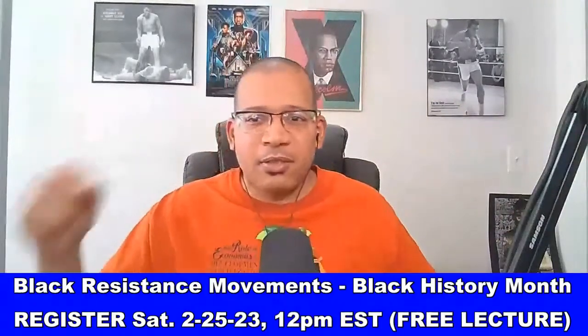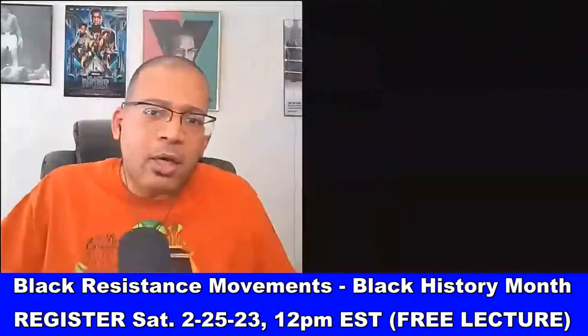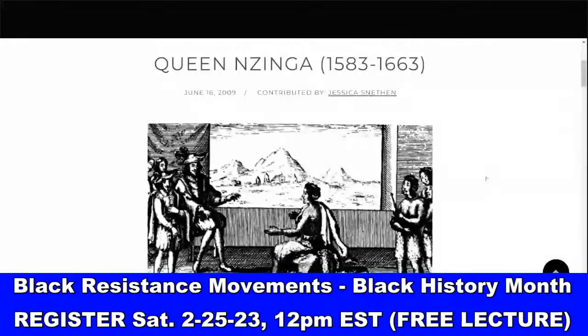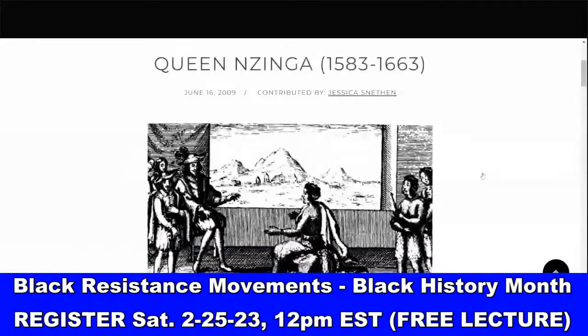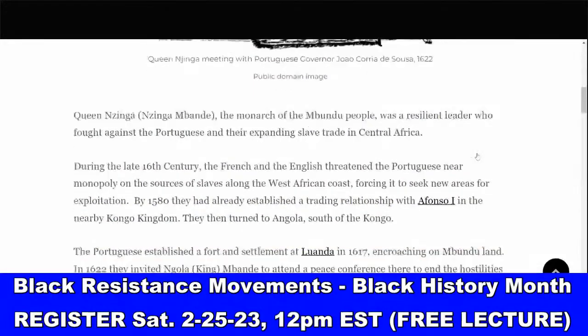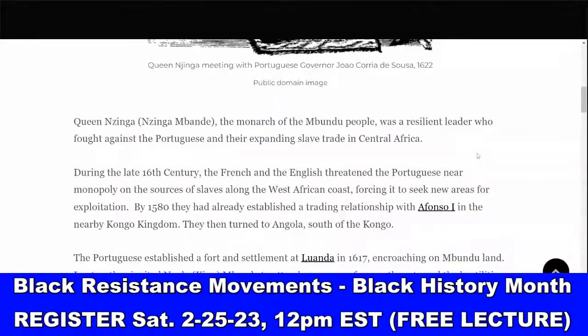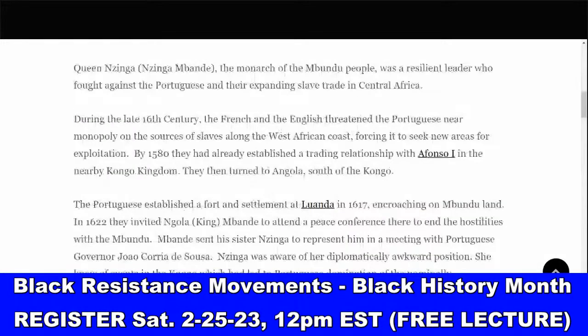Rob asked whether we'll cover the 1877 Compromise — absolutely. You can't deal with the Jim Crow era without dealing with the Compromise of 1877. In the Sunday class starting February 26th — From the Civil War to the Civil Rights Movement and Black Power, 1800 to 1968 — we deal with the Civil War 1861–1865, Reconstruction 1865–1877, the Compromise of 1877 ending Reconstruction, Jim Crow, World War I, World War II, the Great Migration, the Civil Rights Movement, and the Black Power Movement.